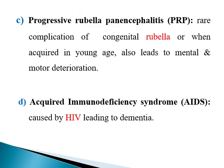A third form is called progressive rubella panencephalitis, which is a rare complication of rubella infection when congenitally acquired or acquired at a young age, and it leads to mental and motor deterioration. Finally, acquired immunodeficiency syndrome, or AIDS, caused by HIV can also lead to slow disease of the CNS, leading mainly to dementia.